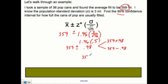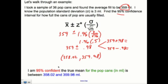And on the low end, 358.02. And then I throw that in parentheses. This is your 358.02 and this is your 359.98. Those numbers just kind of fill in here.